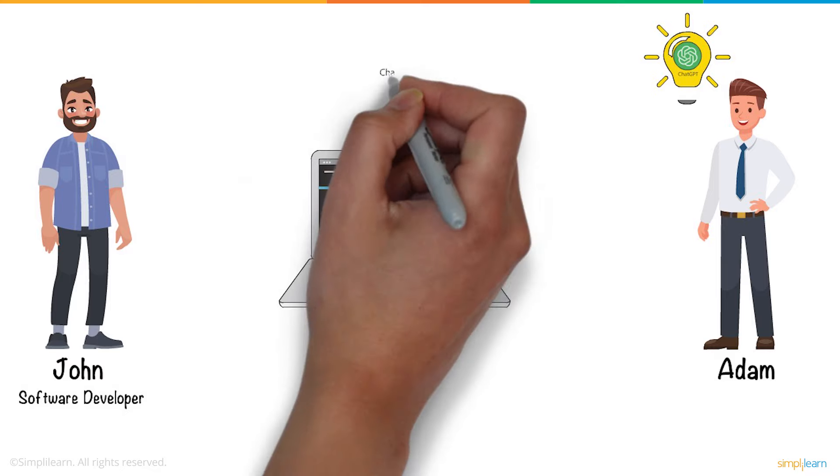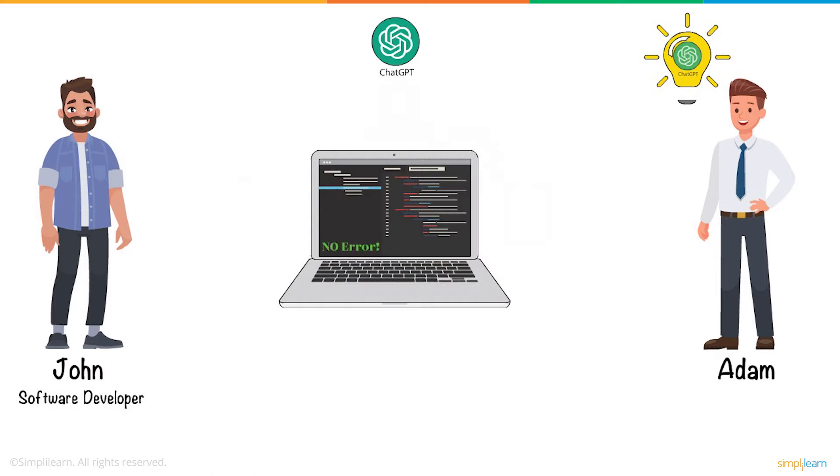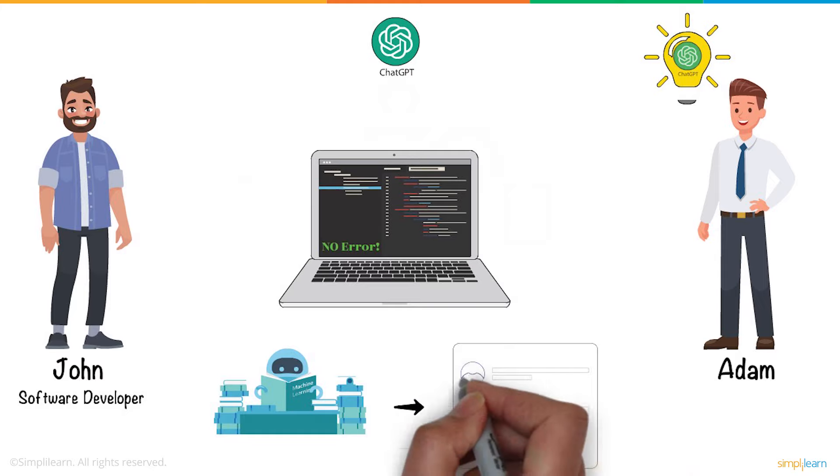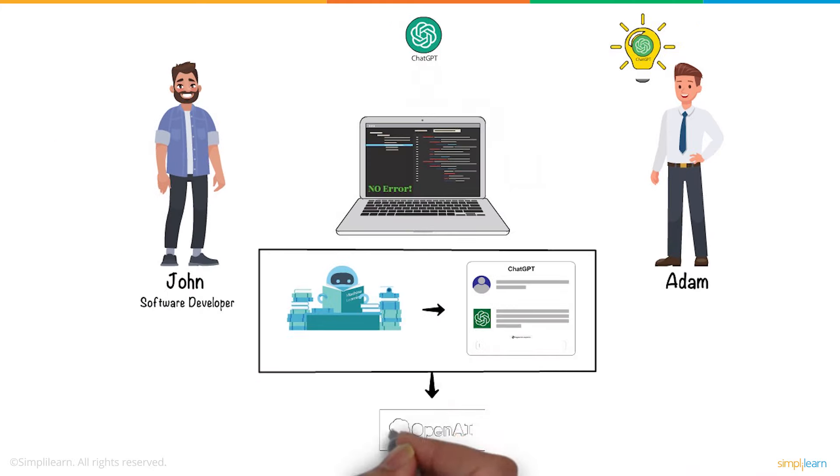Adam says ChatGPT has the caliber to systematically resolve all the bugs with an elaborate explanation for every step it makes. ChatGPT is an AI-trained model that works in a conversational way, developed by OpenAI.